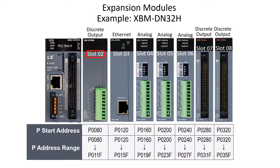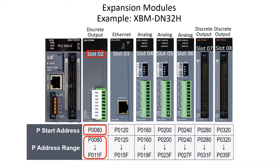Slot 2 is the first expansion slot in the M-type configuration. The first discrete address is P-Word 8 bit 0, and the range is P8 bit 0 through P11 bit F. The last character in the P address is the bit in hexadecimal format. In the configuration shown with an 8-point relay module in slot 2, the discrete bit addresses are P-Word 8 bit 0 through P8 bit 7.